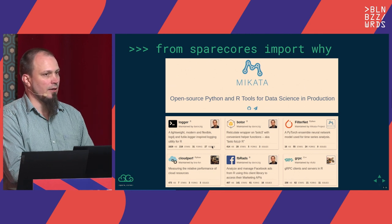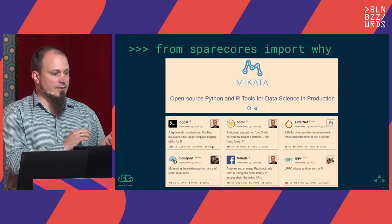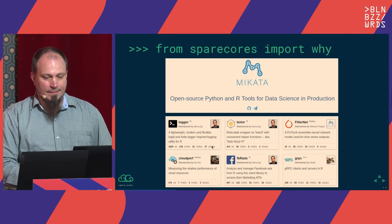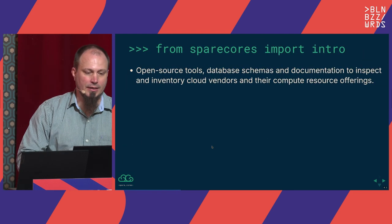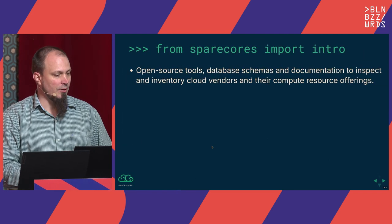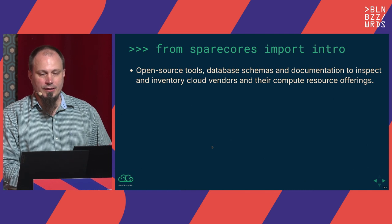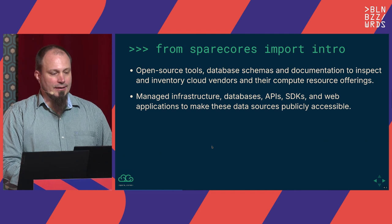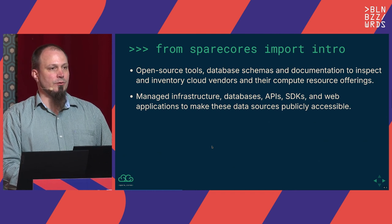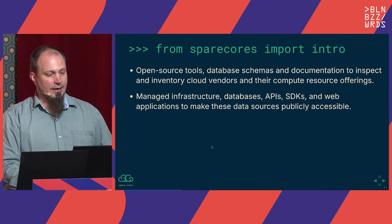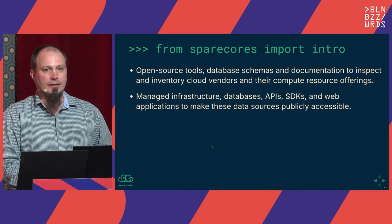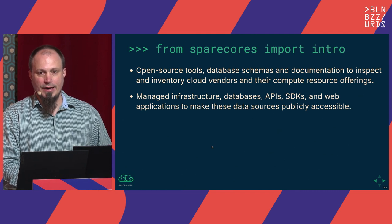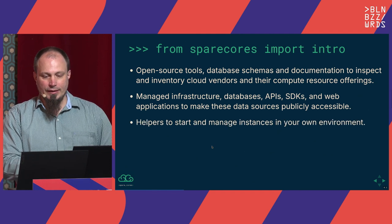We also had some other ideas and managed to get funding from NGI Search to work on the next generation of the project. That's how we started SpareCourse, which is an ecosystem of open source tools, some open data, documentation, and so on. We also provide managed infrastructure and public databases, so you don't have to run our Python tooling yourself — we run it every five minutes and make the data available for free, publicly. We also host APIs and provide SDKs so you can query that data easily.